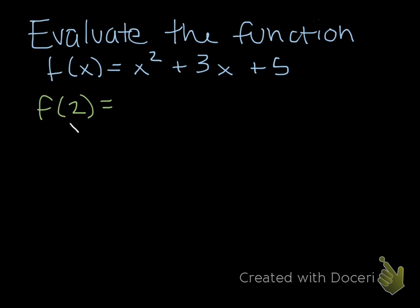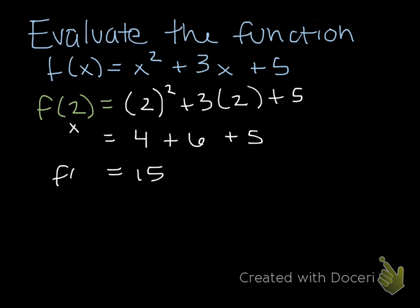So all this means is everywhere I see x, I substitute in the value of 2. It's important to use parentheses, especially if the value is negative. And then we just follow our order of operations from here. So 2 squared will give us 4 plus 6 plus 5, and you just add straight across and you get 15. So this means when I input the value of 2, my output is 15.